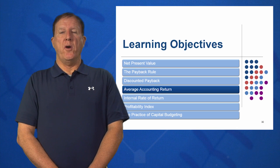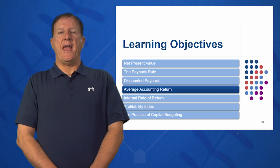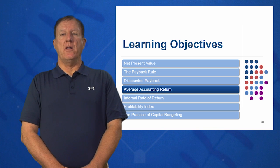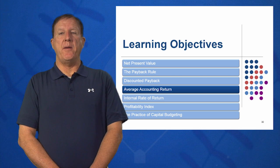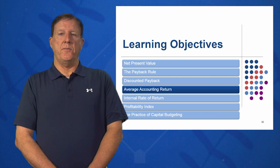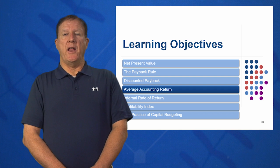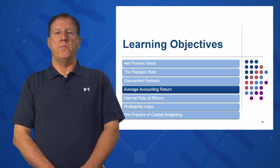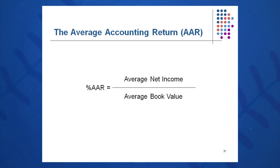In learning objective 4 we're going to learn to calculate the average accounting return. For this we will need an income statement for five years and a balance sheet for five years. We're going to take average net income divided by average book value. AAR is simply average net income divided by average book value — from the income statement I get the average net income over five years, and from the projected balance sheet I get the average book value.